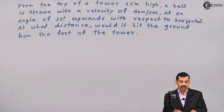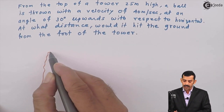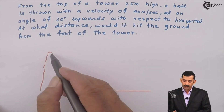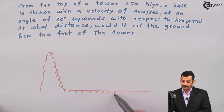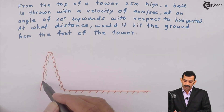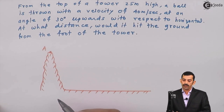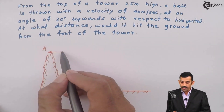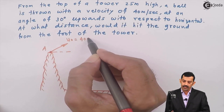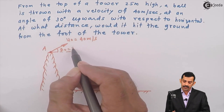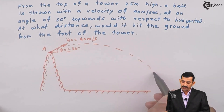The problem is not difficult — representing it graphically makes the solution very easy. Here we have a tower and the ground. A ball is projected from the top of the tower — call this point A — with velocity u₀ = 40 m/s at angle θ₀ = 30° above horizontal. The ball traces a curved path and finally strikes the ground.